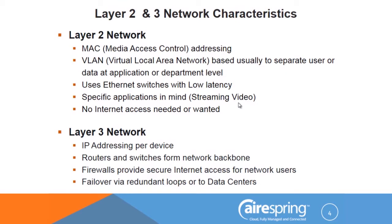Layer 3: everybody has their own IP address — that's what makes it Internet Protocol. Addresses like 192.168.20.3 use routers and switches to form an entire network. Switches hang locally where the information is; routers take them across states or across the country. Internet access is available to all on Layer 3 networks because that's where the Internet works, and you need firewall protection. Layer 3 people also address failover needs and redundant loops to data centers. Layer 2 is specific and precise; Layer 3 wide-area is what most people think of and use today.